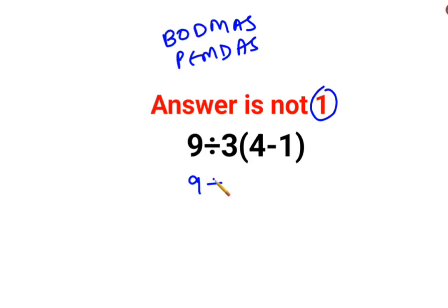So this 9 divided by 3 can be kept as it is. And since there is no sign between this 3 and the bracket, it means multiplication. 4 minus 1 is 3.